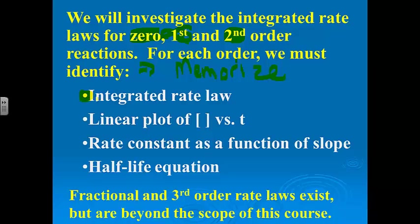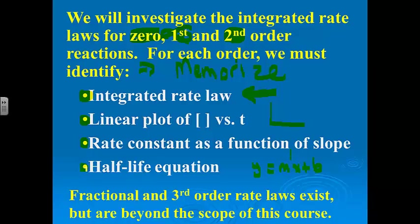We haven't done pure memorization in a while, but it's worth it. Number one: the integrated rate law, which is just another form of the rate law. Some of these are on the AP Chem sheet, but you don't get the AP Chem sheet on the multiple choice section, so it's worth memorizing. Number two: what a linear plot of the concentration of the reactant versus time looks like, because we're going to use graphical data to determine reaction order. You also have to know the rate constant as a function of slope — that's just recognizing the y = mx + b form — and the half-life equation.